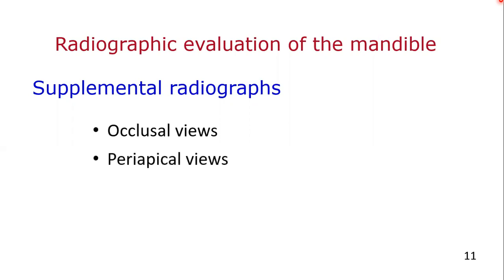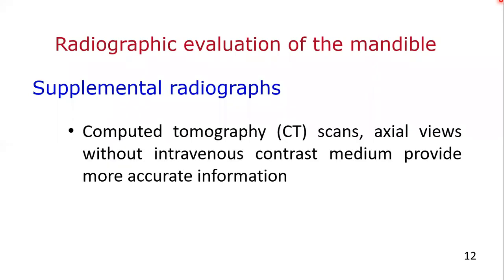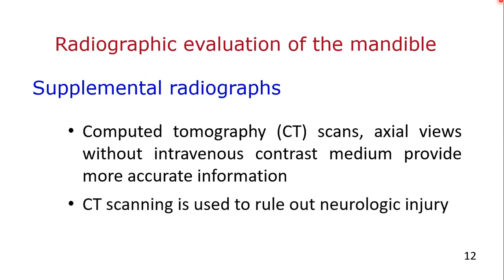Occasionally, even these radiographs do not provide adequate information. Therefore, supplemental radiographs including occlusal or periapical views may be helpful. Computed tomography scans, axial views without intravenous contrast medium, may provide information not obtainable from plain radiographs, or when cervical spine precautions or other injuries do not permit standard facial positioning. CT scanning is used to rule out neurologic injury in many patients with facial trauma, and can also be used to supplement the radiographic evaluation.